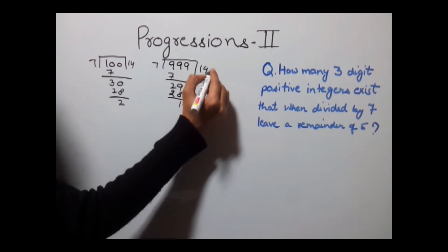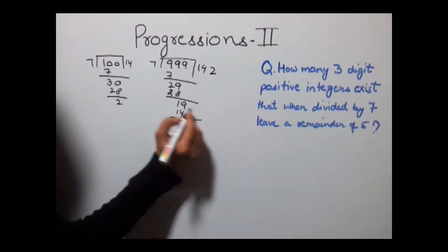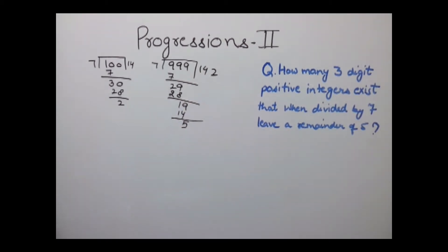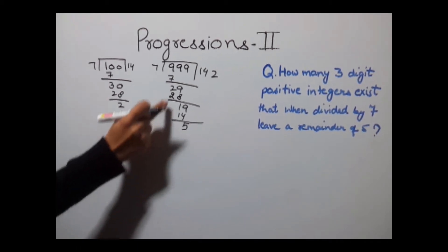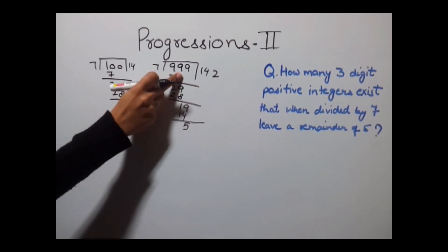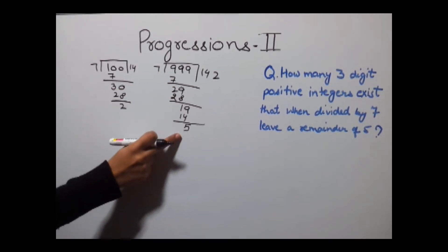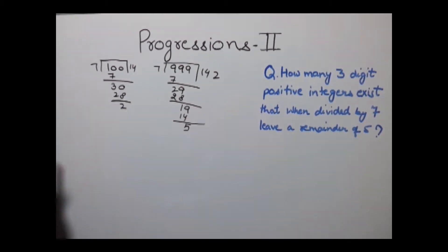19, 7×2 = 14, we get 5 as remainder. Now in this case we're getting 5 as remainder. This means this is one of the 3-digit numbers which when divided by 7 gives a remainder of 5.